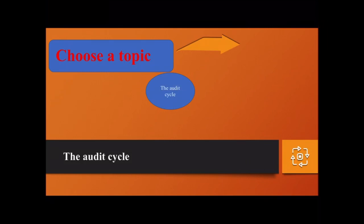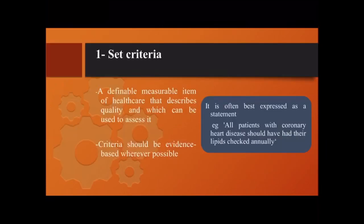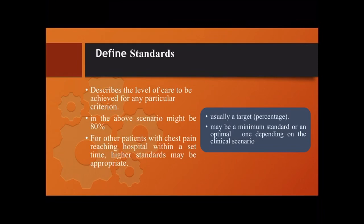After choosing a topic, you start the audit cycle by setting criteria and defining standards. Criteria are definable, measurable items of health care that describe quality and which can be used to assess it. Criteria should be evidence-based wherever possible and are often best expressed as a statement — for example, 'all patients with coronary heart disease should have had their lipids checked annually.' A standard describes the level of care to be achieved for any particular criterion; in the above scenario, it might be 80%.